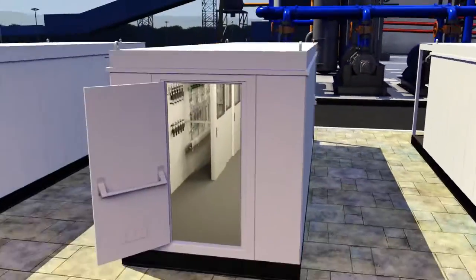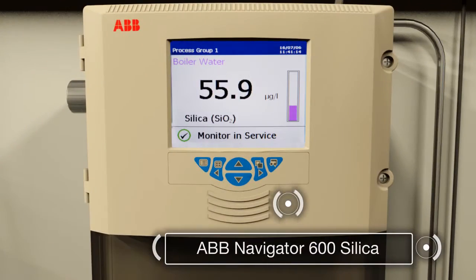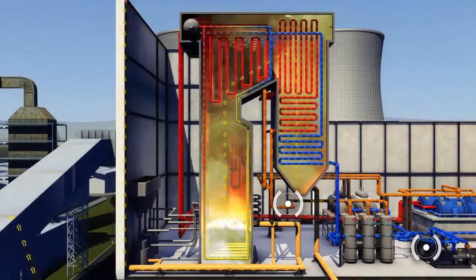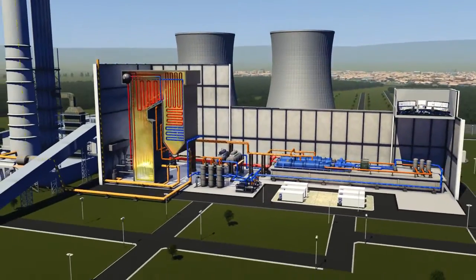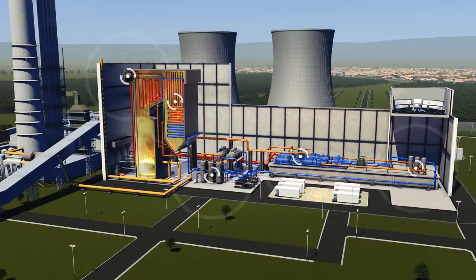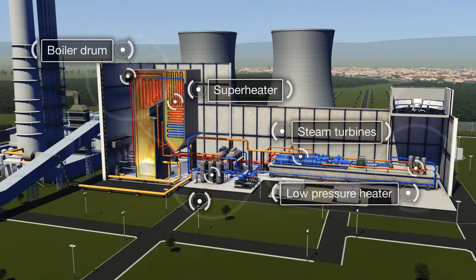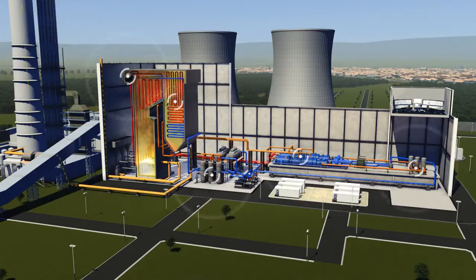ABB's Navigator 600 silica analyzer substantially cuts the costs and maintenance associated with silica monitoring in power plant generation applications. A thorough monitoring regime should see silica being measured around the steam generation and distribution cycle, including the demineralization plant, boiler drum, superheater, steam turbine and condensate polishing plant.